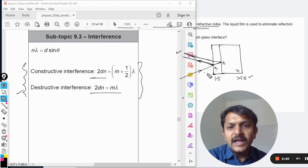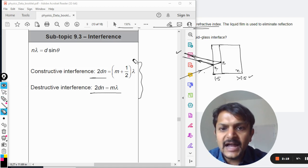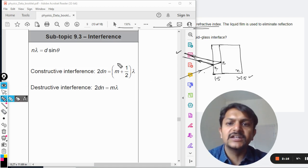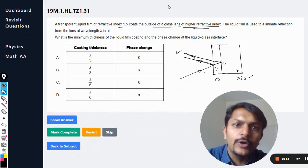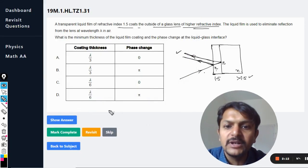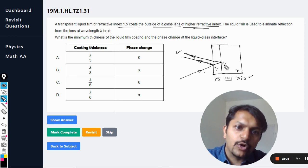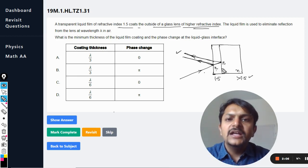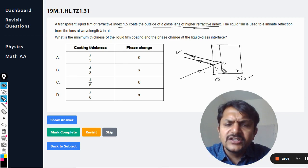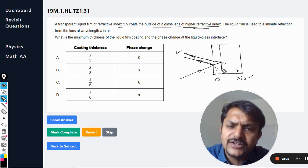Light is coming from rarer to denser, so phase change of pi takes place. But at this also, the phase change of pi takes place, it is not zero. So it means that the formula that is given in the data booklet we are not going to use, that is not usable here. In this case, both of them are having a corresponding phase difference of pi, thereby nullifying each other, therefore cancelling the effects of each other.